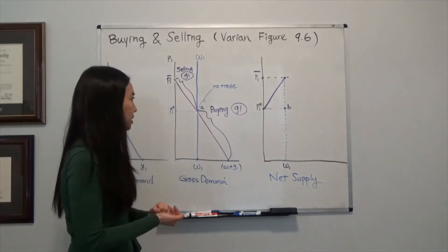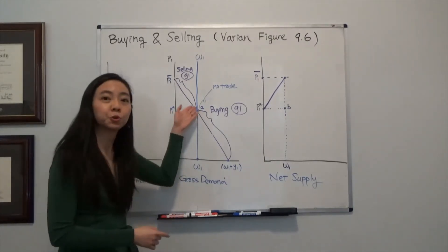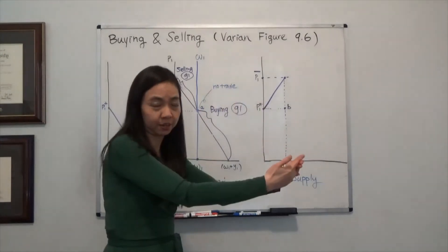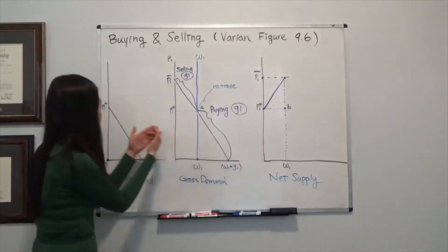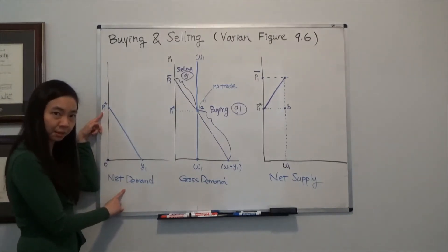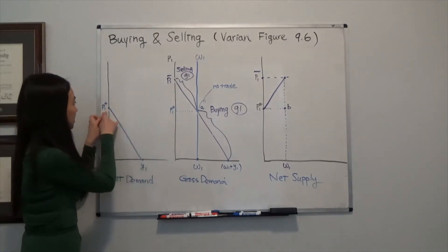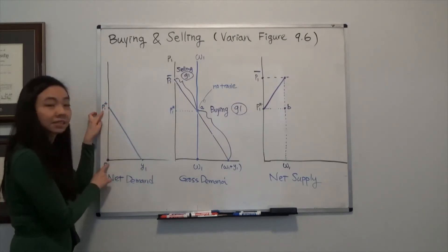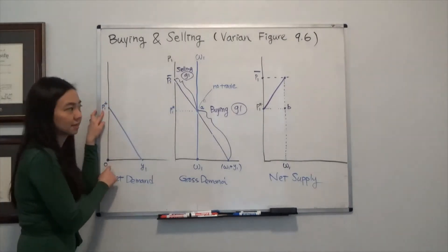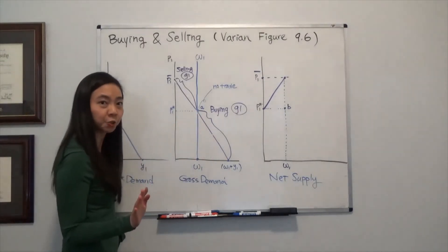So what happens if my price is lower than P1 star? We're going to go to the market to buy more Good 1. When the price is P1 star, notice that this is my net demand for Good 1. So when the price of Good 1 is exactly P1 star, that means I'm buying zero Good 1 because I'm enjoying my endowment at home. So I'm not buying any additional Good 1.